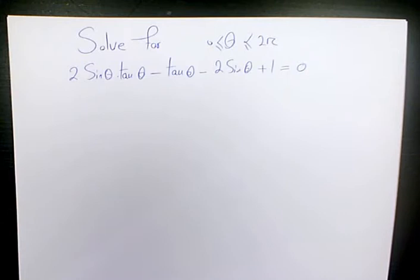In this video I want to show you how to solve this trigonometric equation: 2sin(θ)tan(θ) - tan(θ) - 2sin(θ) + 1 = 0.